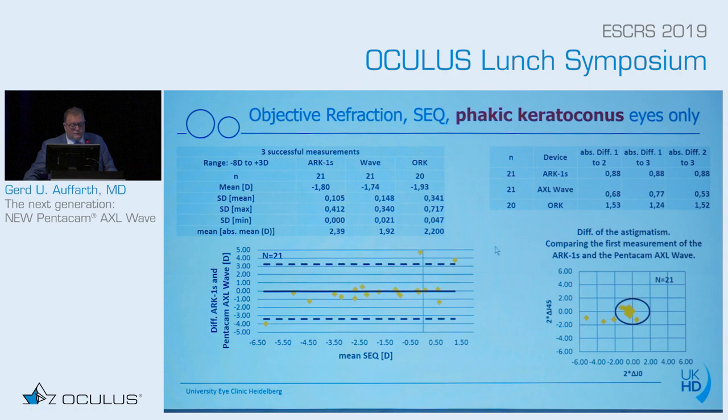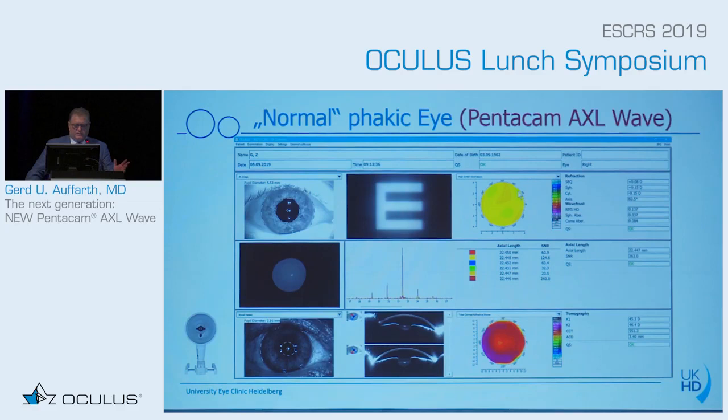This is what a normal phakic eye looks like in the device output. You get the refraction, the wavefront, the axial length, the tomography, and the retroillumination photos. So with one view, one single measurement, you can see almost everything you need for a cataract or refractive patient.